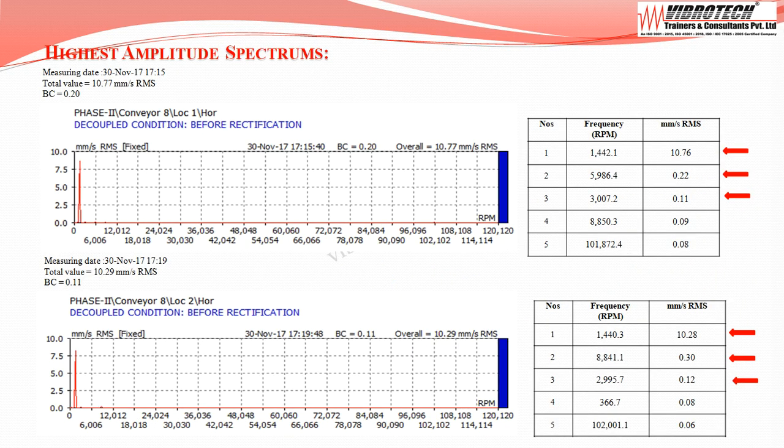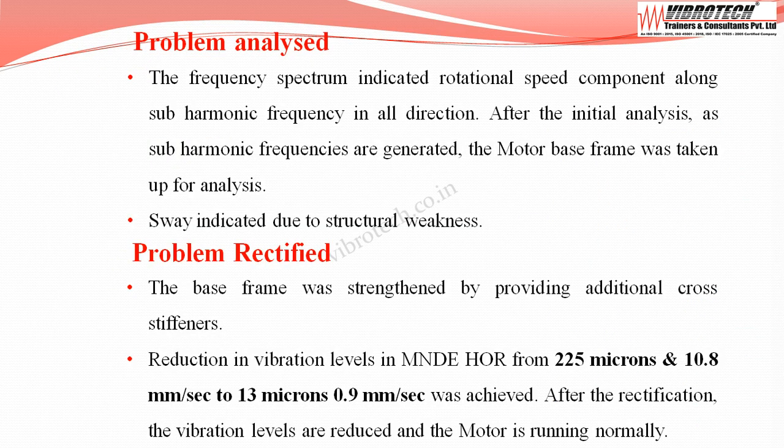Going through the spectrum, the dominant peak frequencies at the motor non-driven end are 1x, 4x, and 2x the running rpm. At the motor driven end, dominant peak frequencies are 1x, 6x, and 2x the running rpm. The frequency spectrum indicated rotational speed components along with sub-harmonic frequencies in all directions, prompting analysis of the motor base frame.